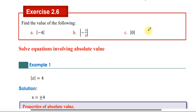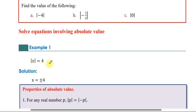Now let us look at how to solve the equation involving absolute value. Absolute value of x is equal to 4. This means x is equal to plus or minus 4. Because the absolute value of 4 equals the absolute value of negative 4, which equals 4.